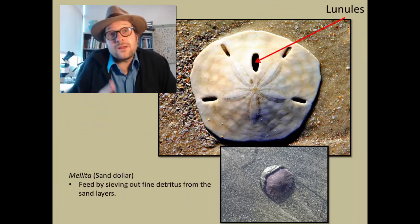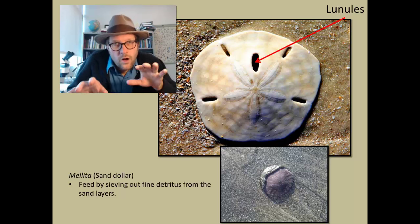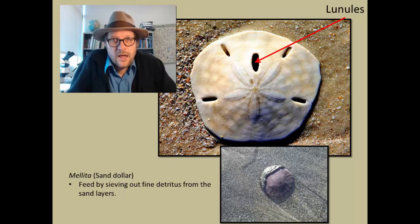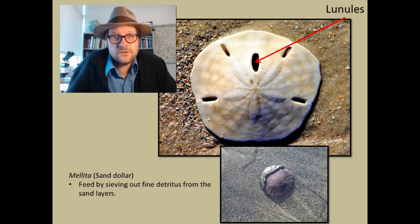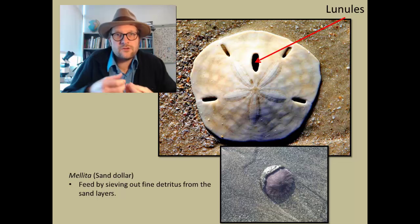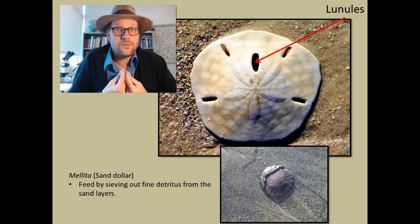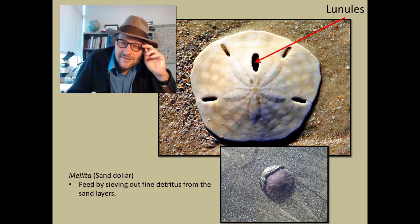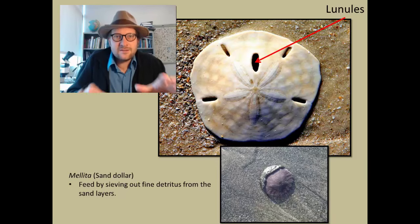One of the echinozoans probably more familiar to most is the sand dollar genus Mellita. These echinozoans crawl through the sediment, filtering out food, and are common in the littoral zones on beaches along the coastlines. The sand dollars have five perforations called lunules. These lunules help sediment to pass through, while food is drawn along grooves on the bottom of the sand dollar to focus the food into the mouth. Hence, sand dollars are adapted to a specialized food-gathering adaptation in sandy sediment.